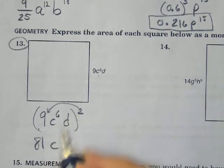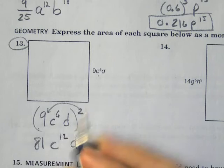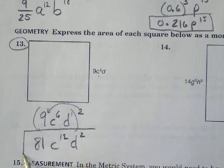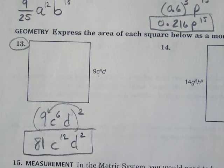6 times 2 is 12, and d to the 1st, 1 times 2 is 2. So my answer becomes 81, c to the 12th, and d squared. Hope that helps a little bit. Good luck.